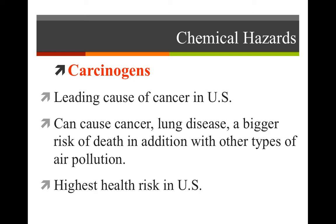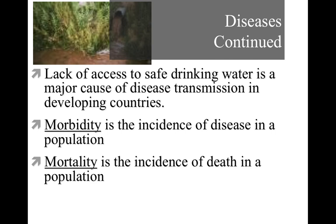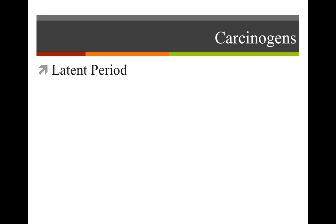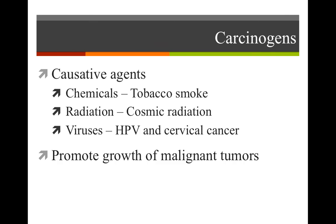Carcinogens are cancer-causing agents — being exposed to secondhand smoke, lung disease, and items like that. The highest risk in the US is tobacco smoking. Morbidity is the incidence of a disease found in a particular population, whereas mortality is the incidence of death. Some carcinogenic agents include tobacco smoke, radiation from exposure to high radioactive materials, and certain viruses like HPV, which can cause cervical cancers and promote growth of malignant tumors in the body.